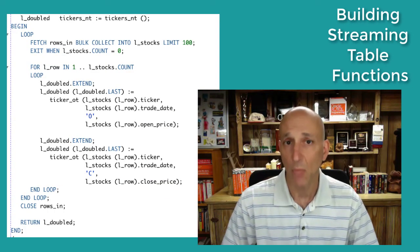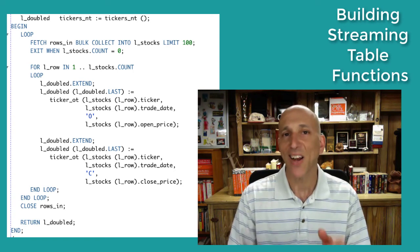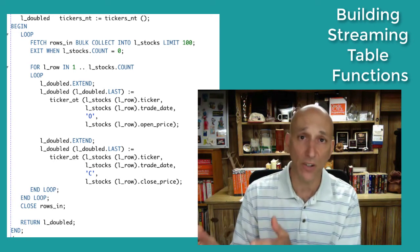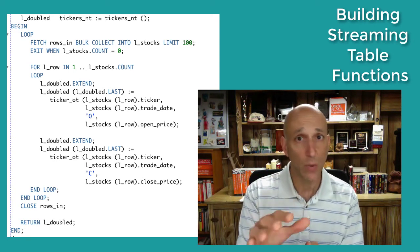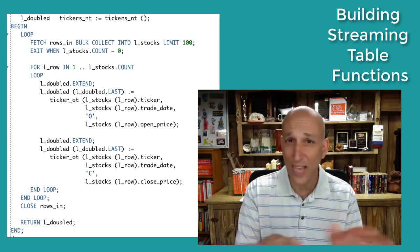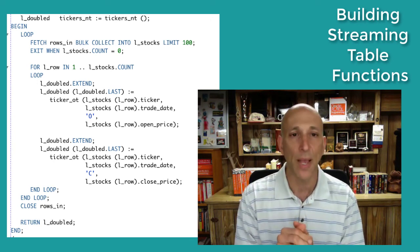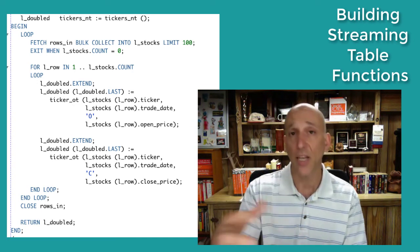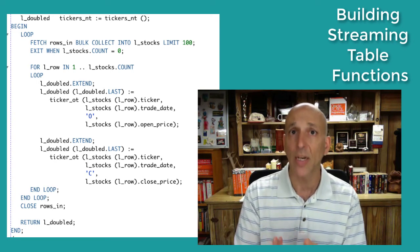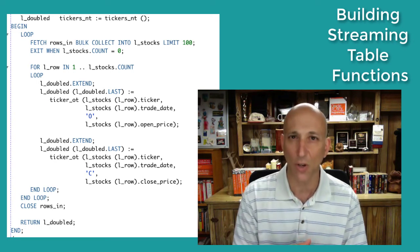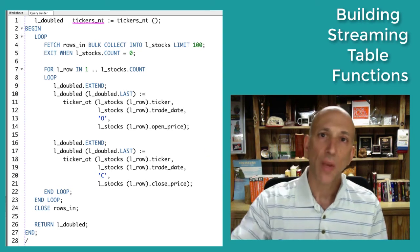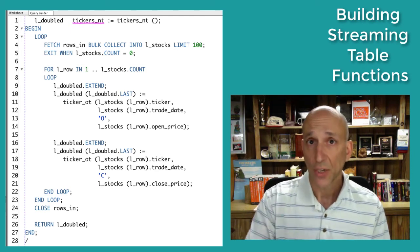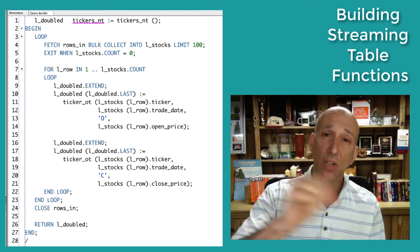The general process of building a table function follows a similar pattern regardless of the specific algorithm: fetch rows coming in through the cursor variable parameter, perform transformations, put the results in the collection, and pass the collection back out. The implementation here is application-specific, but the goal is to make performance as top-notch as possible by avoiding row-by-row processing.